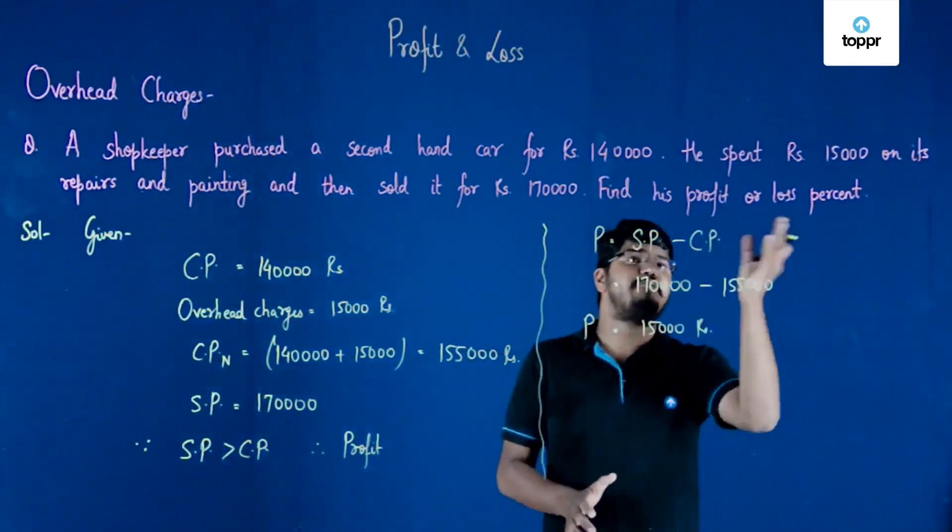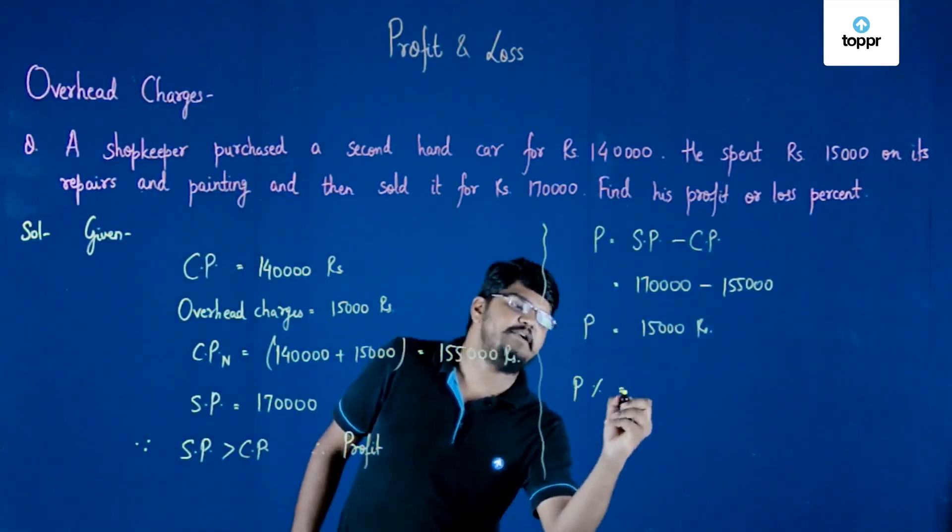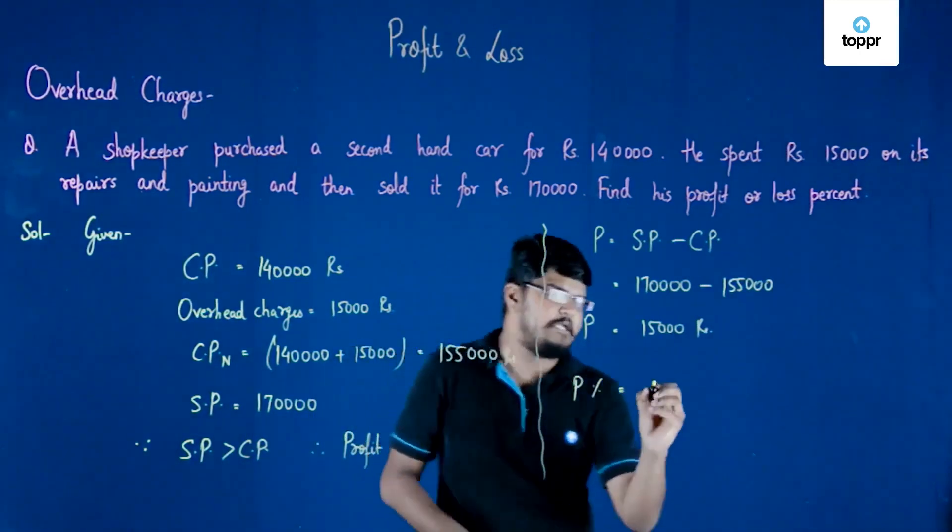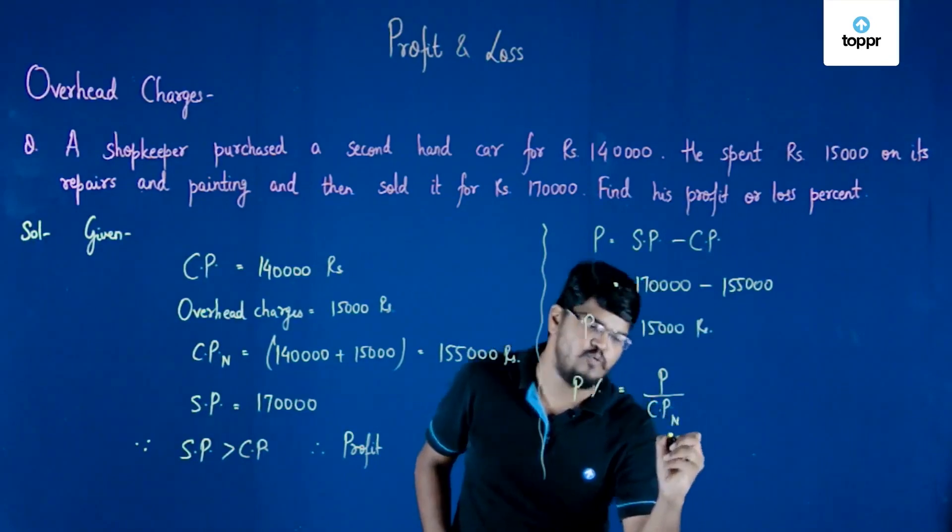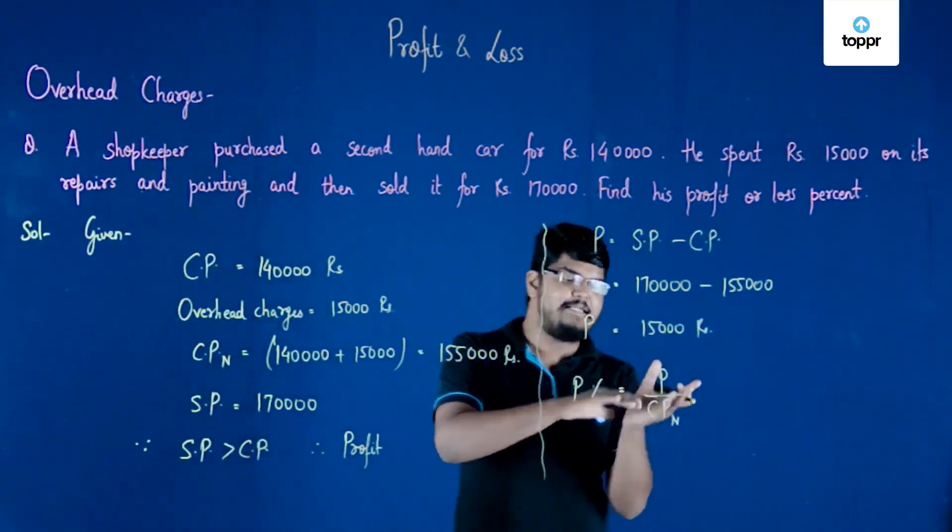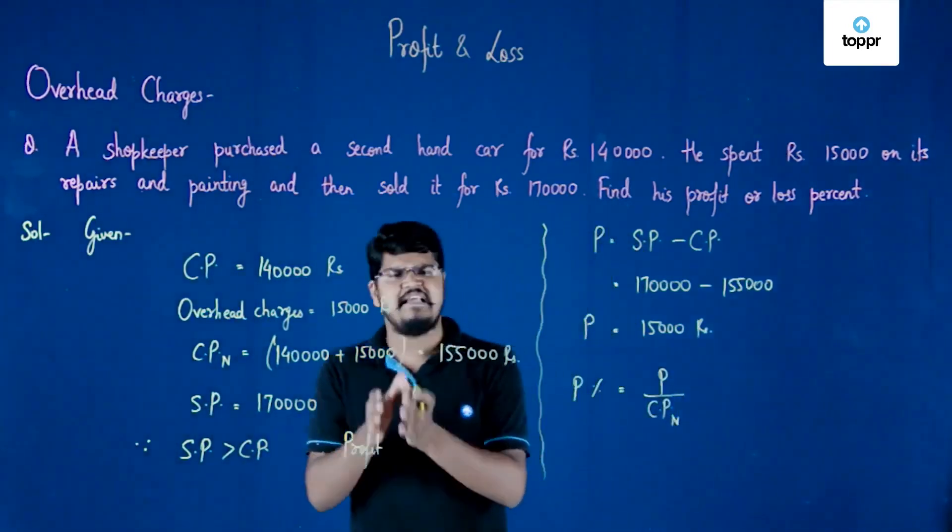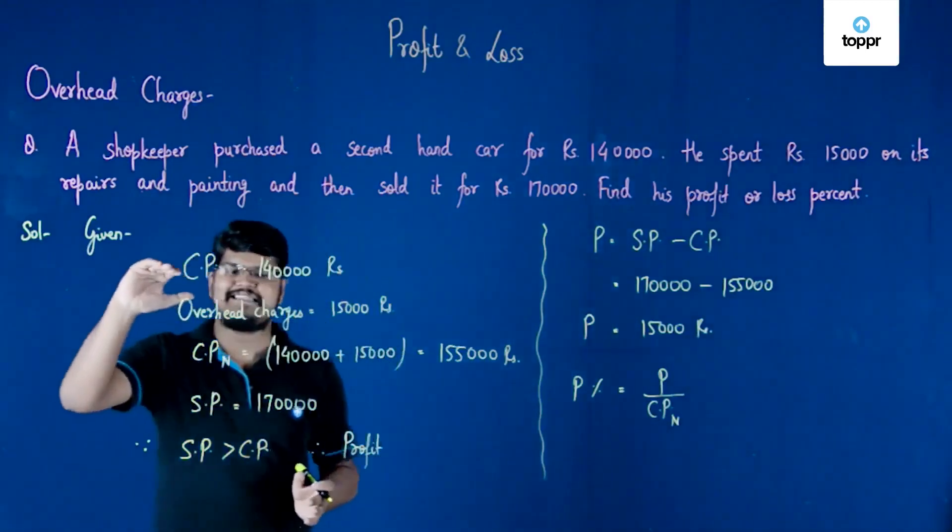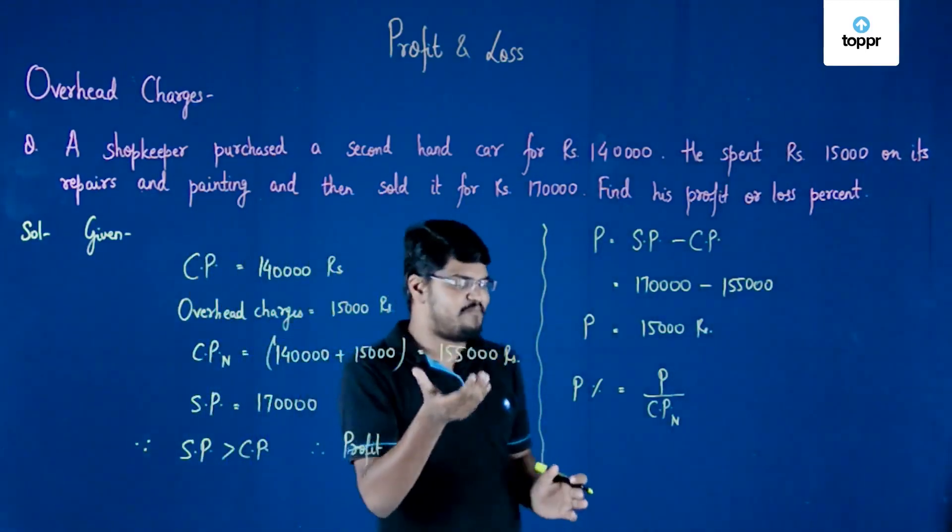But we have to find out the profit percent. For profit percent, this is actually equal to profit upon cost price new. Here, an important thing is that we always consider the total cost price in the denominator. In this particular case, the total cost price is the sum of the cost price and the overhead charges, which is 1 lakh 55,000 rupees.